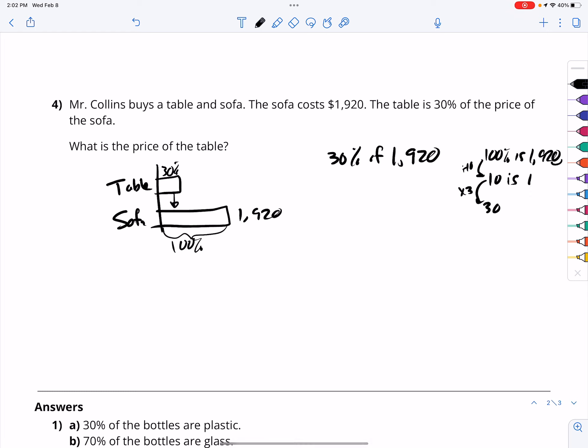Going from 100% to 10% is easily dividing by 10. So, 1,920 divided by 10 is 192. And then 192 times 3. That's going to be 3 times 100 is 300. 3 times 90 is 270. And 3 times 2 is 6. Add those up, you get 576. So, 30% is $576. That means the table costs $576.